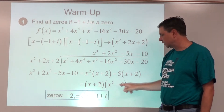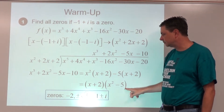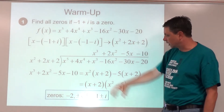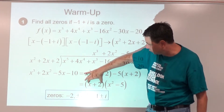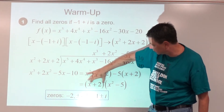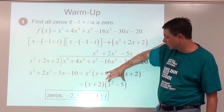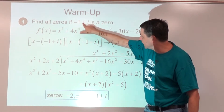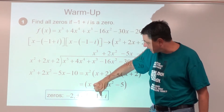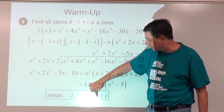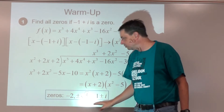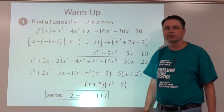There's now a common factor of x plus 2, with leftover factors of x squared minus 5. So all of the zeros are: negative two (set that equal to zero), plus or minus root five, and then our original negative one plus i and its conjugate pair negative one minus i — one, two, three, four, five zeros.